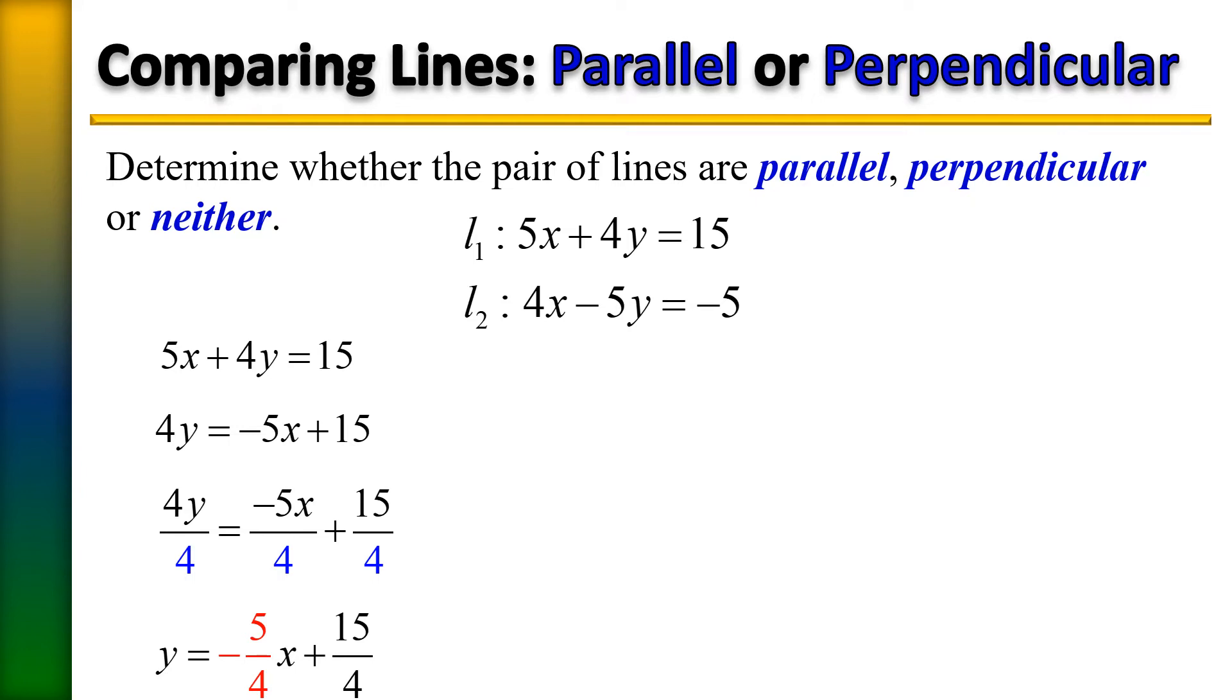Now, let's do the same thing to line 2, rewrite it in slope-intercept form. So, the first thing we need to do on this one is to subtract 4x from each side. Last step to solving for y is to divide by negative 5. Again, what you do to one term, you must do to all. Once we simplify that line, our line is y equals 4 fifths x plus 1.